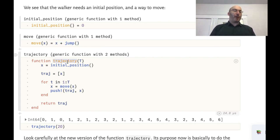So it returns the new value of x. Now we can rewrite our trajectory function. It's now going to call this initial_position function and call the move function. And so the trajectory function is now basically just the bookkeeping of storing these values and calling the right functions to make the walker move.